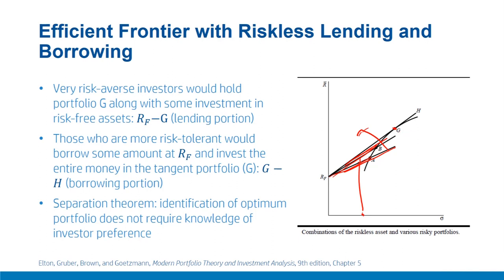At the tangency point G, the line passing from RF attains the highest slope. The Sharpe ratio — RG-bar minus RF upon Sigma G — is highest when the point is the tangency point on the efficient frontier. If the line is further rotated, there are no portfolios in the feasible region. Therefore, line RF to G offers the highest return for any given level of risk compared to any combination of risk-free asset and investment on any point of the efficient frontier.